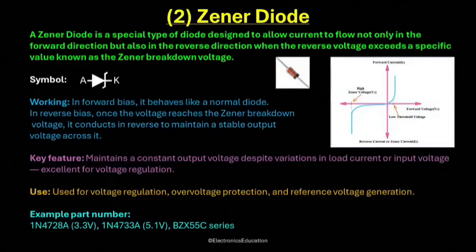Zener diodes are also used for over-voltage protection. When the voltage in a circuit rises beyond a safe limit, the Zener diode conducts and diverts the excess current, protecting the components from damage. Another common use is as a reference voltage source in precision circuits where a stable voltage is needed. Common Zener diode part numbers include 1N4728A, which has a breakdown voltage of 3.3 volts, and 1N4733A, which has a breakdown voltage of 5.1 volts. Another widely used family is the BZX55C series, available in different voltage ratings for various applications.